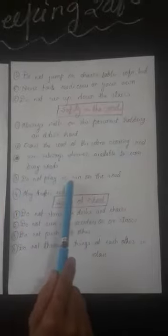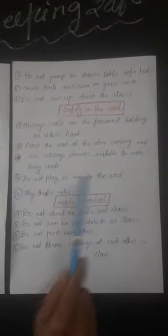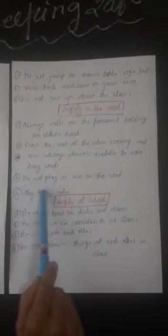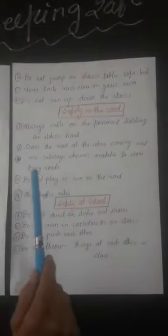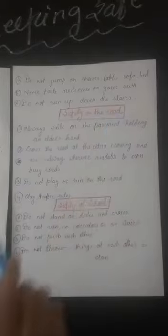Do not play or run on the road. Obey traffic rules. This is the most important safety rule for when we go on the road.